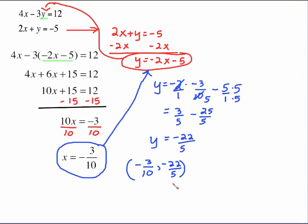So our ordered pair, our point of intersection is negative 3 tenths, comma negative 22 fifths. If we graph this, we'd have a heck of a time finding this point of intersection. That's why the graphing method is not the best method for finding the point of intersection.